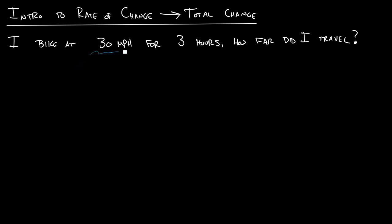Well, this 30 miles per hour, this is a rate of change, right? We thought of velocity as a rate of change of distance before. So this is really a rate of change. And this is the amount of time I'm doing that rate of change for. And we want to know how far did I travel. Now, what is this how far did I travel? Well, this is really a total change. And so when I'm asking this problem here, I'm asking you to go from a rate of change for a certain amount of time to a total change.